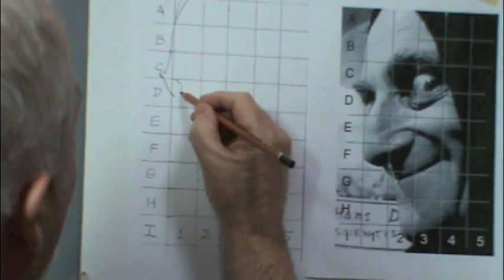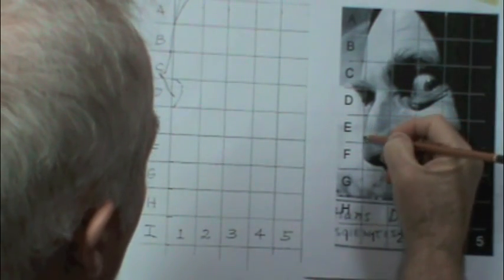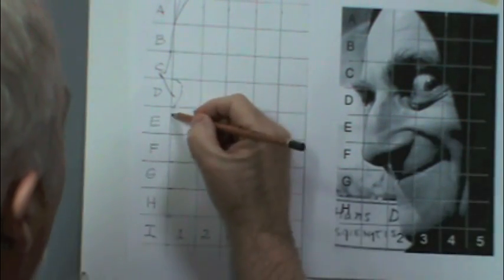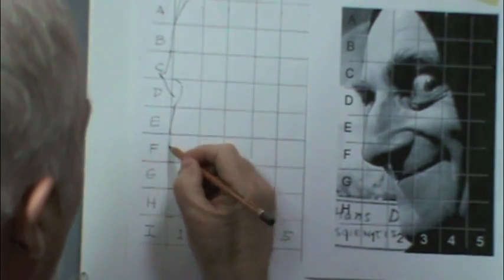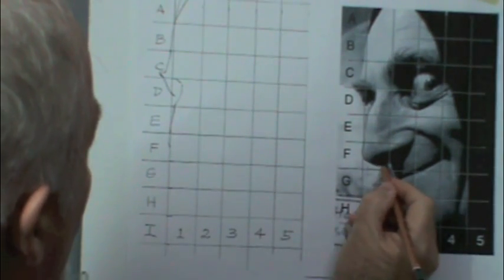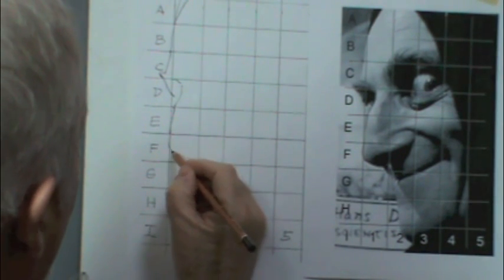And you'll notice another thing that I'm doing. I don't typically do this, but just so you can see what I'm looking at, I'll follow the edge line on the photograph, and then move over to the grid area, and reproduce that edge line.